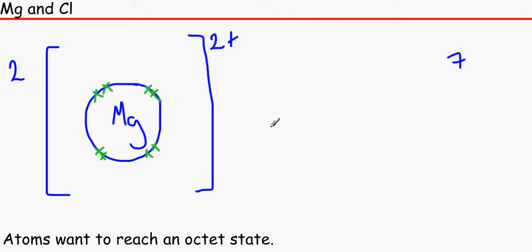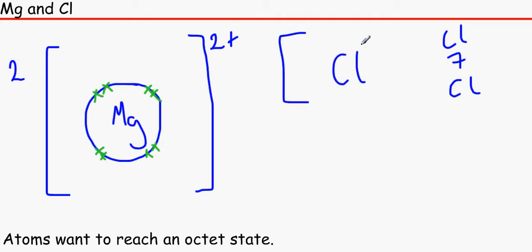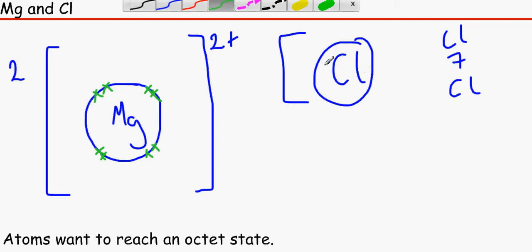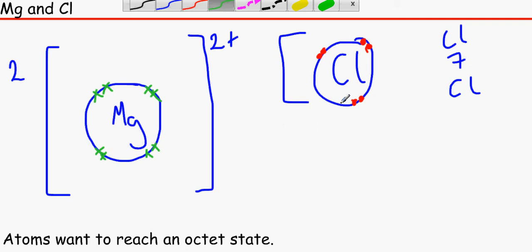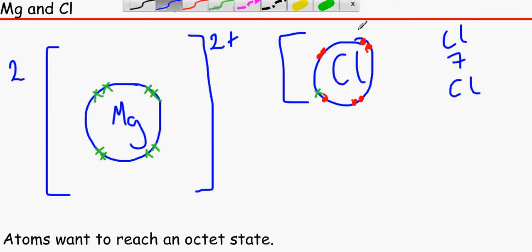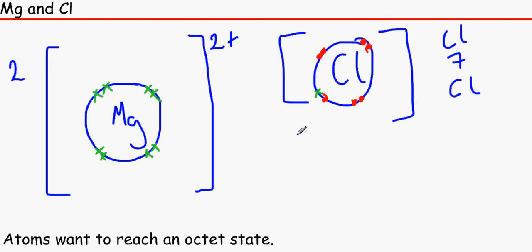Magnesium has 2 electrons to give away and chlorine only needs 1. So 1 electron from magnesium will go onto one chlorine, and another one will go onto another chlorine — that means you need 2 chlorine atoms. We draw another bracket with Cl, using dots to represent a different element, with 8 electrons shown. One electron has moved over to each chlorine. That's why the formula is MgCl₂. You write minus, or 1 minus, on each chlorine ion.